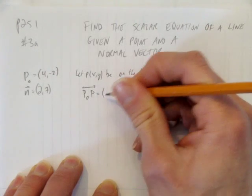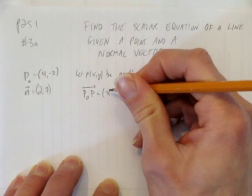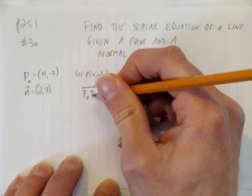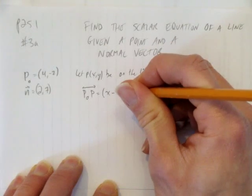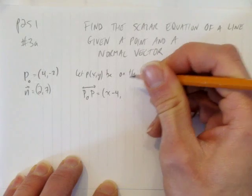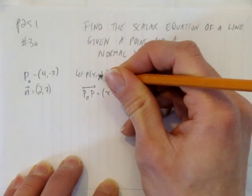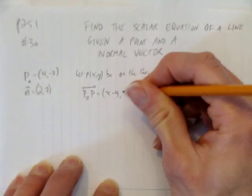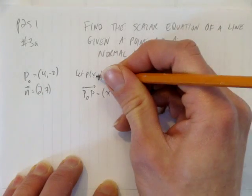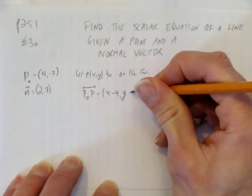Just by going x, that is, the x-coordinate of this P, take away the x-coordinate here. And same thing with the y's. This would be y, take away negative 2, or y take away negative 2 would be plus 2. So we get that expression.